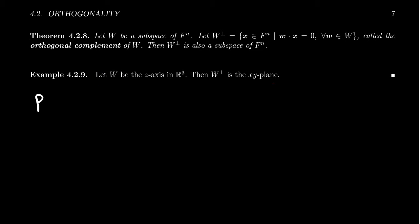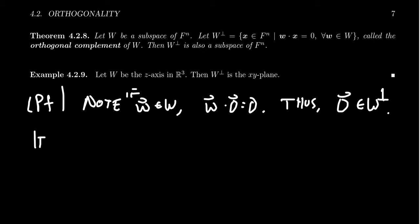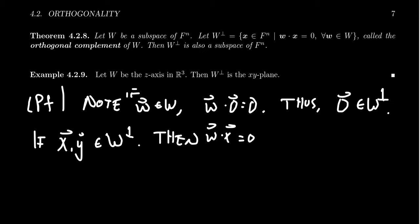The proof is actually quite simple — it follows directly from the definition. First, let's show that the zero vector is inside W perp. Note that for any vector w in W, w dot the zero vector equals zero, since the zero vector dotted with anything equals zero. Therefore the zero vector is part of the orthogonal complement. Next, suppose X and Y are vectors inside W perp — that means W dot X equals zero and W dot Y equals zero for all vectors w in W.